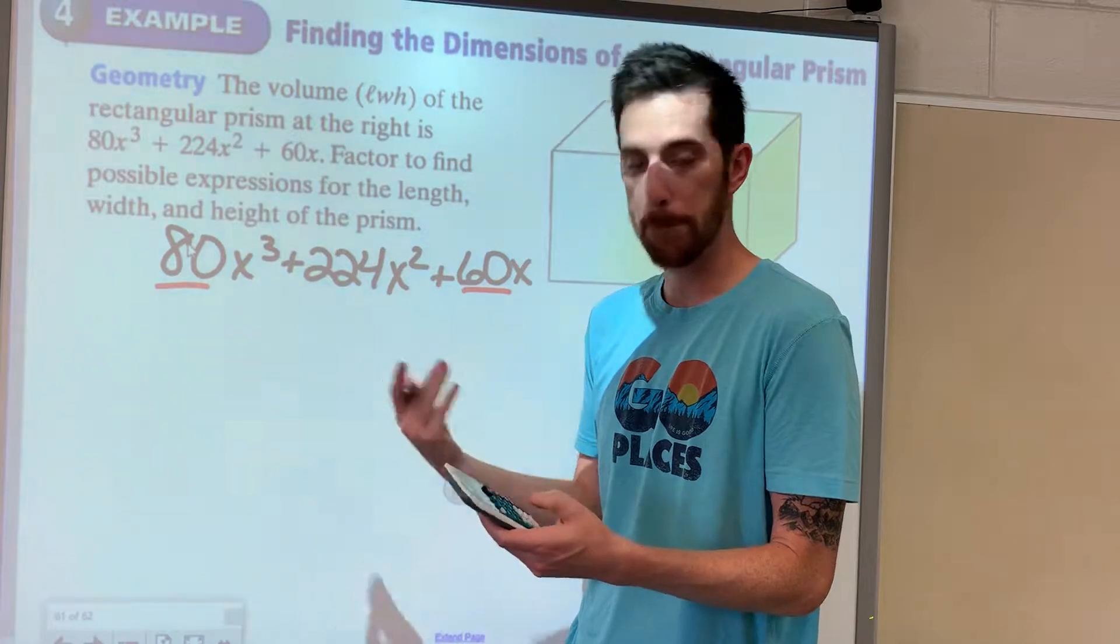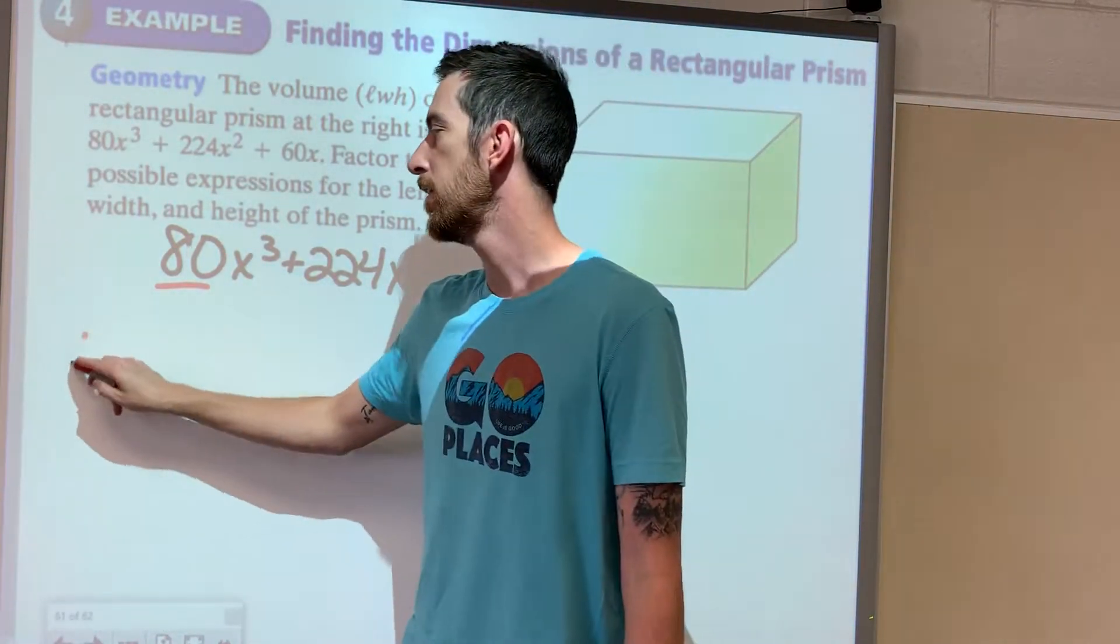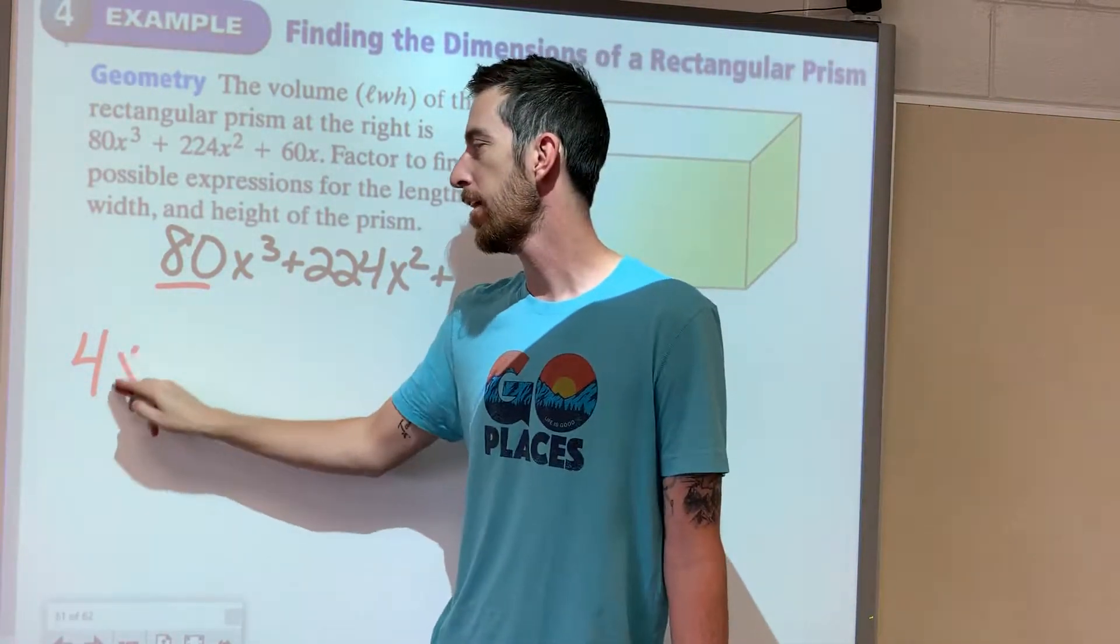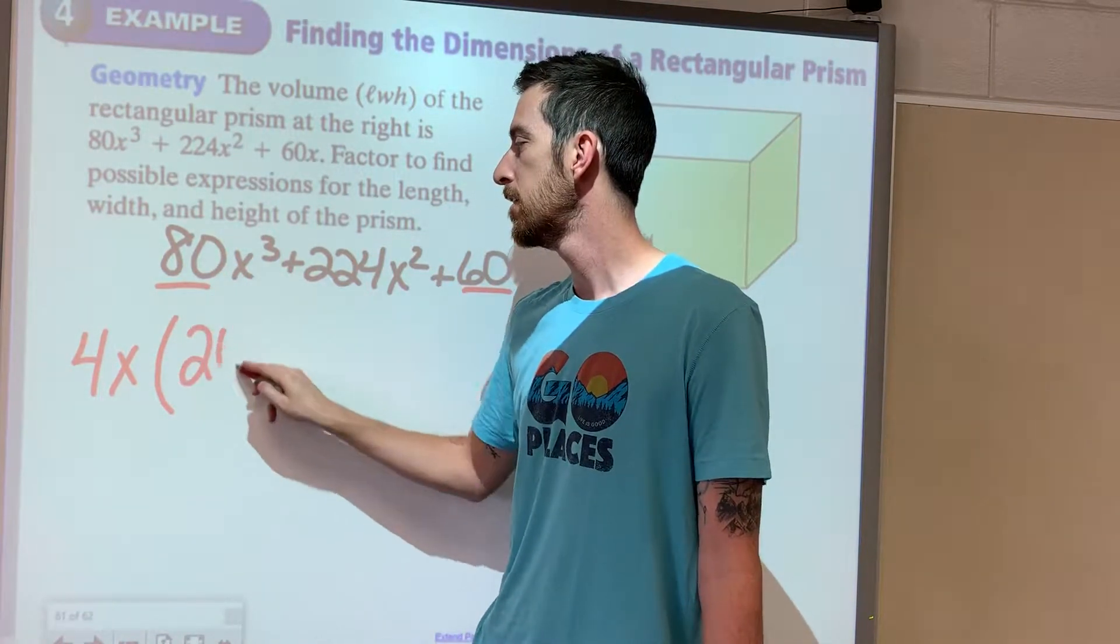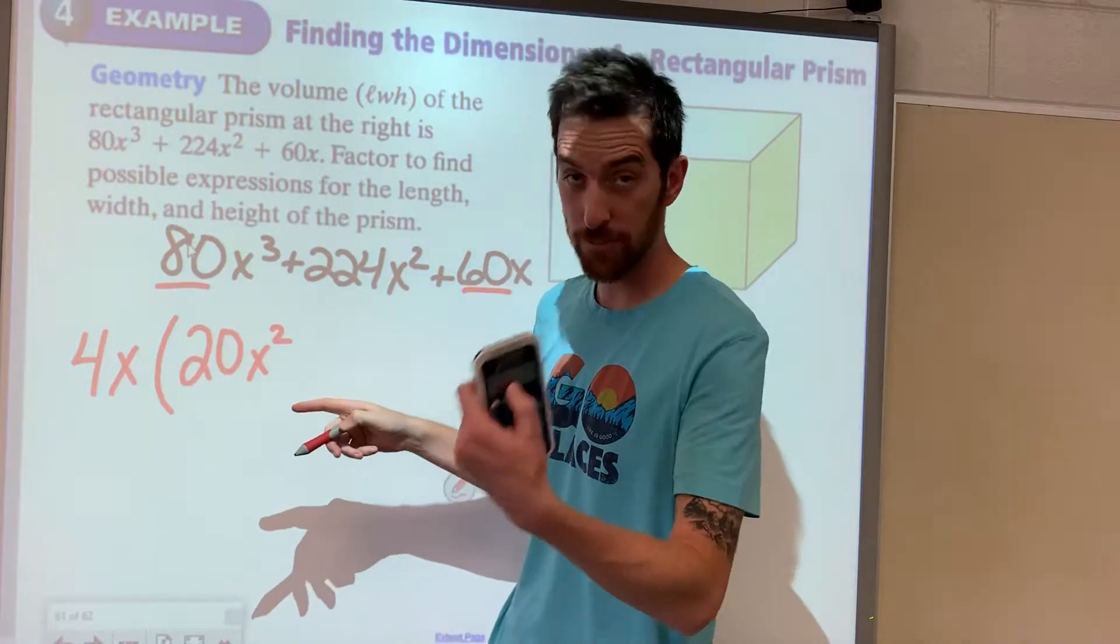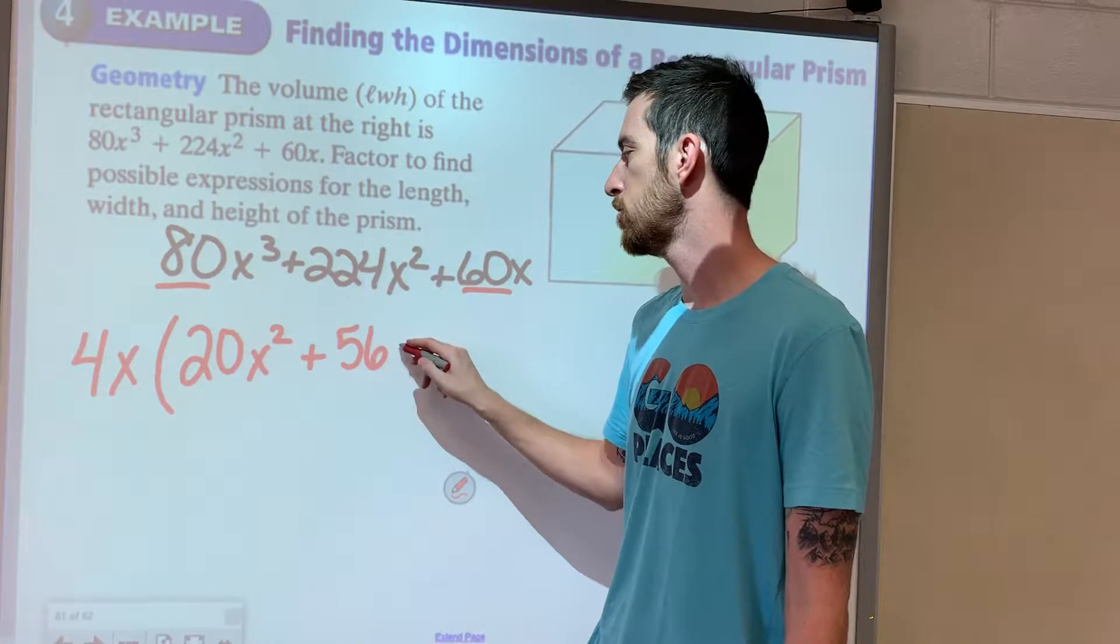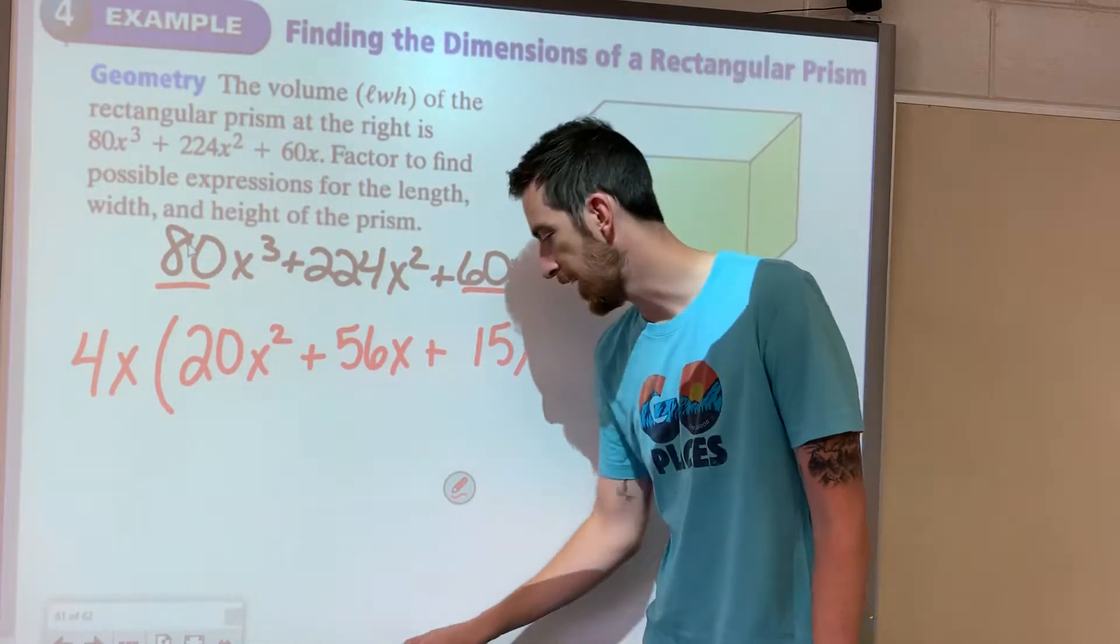224 divided by 4, boom, 56. So let's try dividing them all by 4. Now they also do have an x, so we will kick out a 4x. 4 times 20 would give us 80. We need x² still. 4 times 56 gives us 224, and 4 times 15 would give us that 60x.